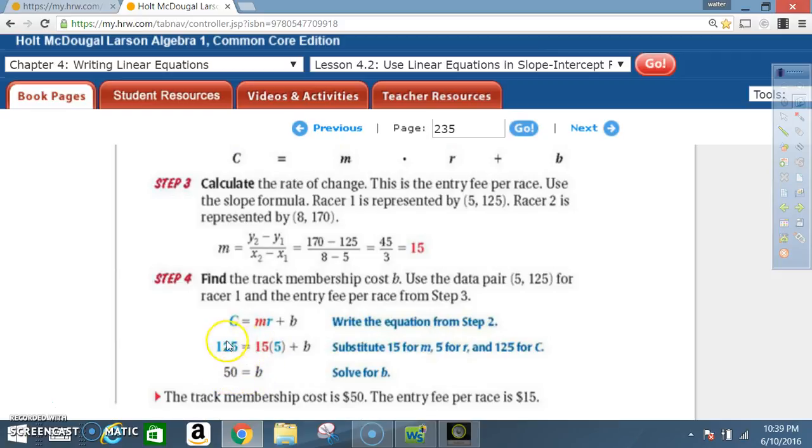Once again, know your basic math. 15 times 5 is 75, and you're going to end up subtracting 75 from each side. So 75 minus 75, that's going to disappear, and then 125 minus 75 is 50. So the track membership cost is $50, the entry fee per race is $15.